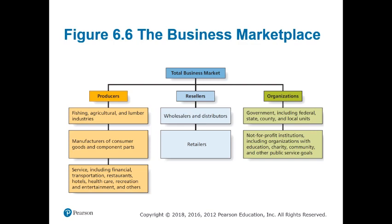We need to classify business customers into three major categories. The first type of customers in B2B marketing is producers — those entities that create or produce goods and services. This ranges from agricultural products, fishing, and lumber in the primary sector, to the secondary sector which involves manufacturing and transforming raw materials into secondary products.